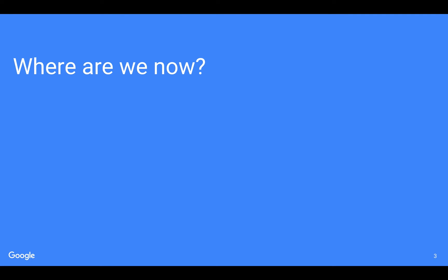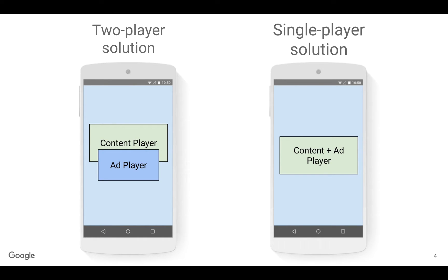So we're going to talk about the future. But before we could talk about the future, we have to talk about where we are now. With the IMA SDK as it is today, there are two main implementation styles: a two-player solution and a single-player solution. In the two-player solution, you have a content video player playing your content, and the IMA SDK creates an ad player — a separate video player on top of the content player — to play the ads. In a single-player solution, there's just one video player used by both content and ads.